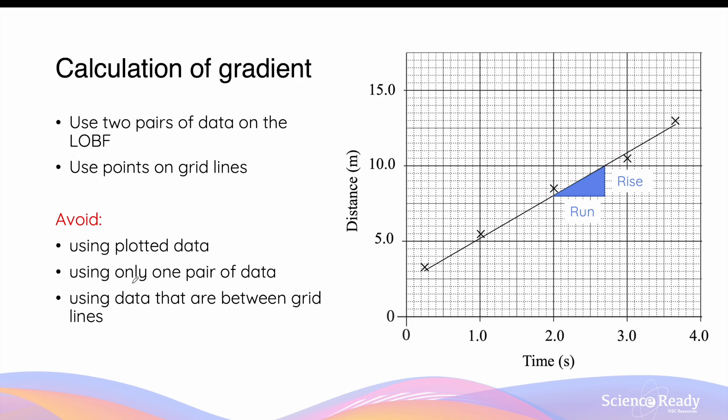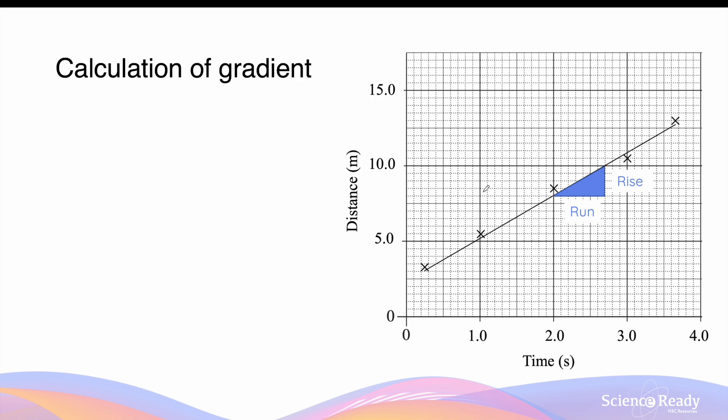You should also avoid using only one pair of data, for example, using this one here, because this approach will only work if your line of best fit passes through the origin, that is, if your relationship is a directly proportional one. In most cases, if your line of best fit does not pass through the origin, you need to pick at least two pairs of data on a straight line to calculate the gradient. And of course, avoid using data that are between the grid lines, these are much more difficult to determine the values of. So let's calculate the gradient.